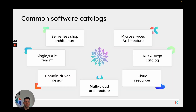Software catalogs come in all shapes and sizes. Some organizations focus primarily on microservices architecture, some focus on Kubernetes and Argo CD catalogs, some focus more on their cloud or multi-cloud environment. Software catalogs can be very unique to every organization, and at Port, we believe that every organization should have the choice to create a software catalog that fits them perfectly.